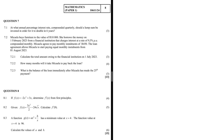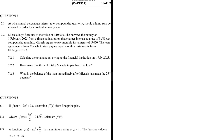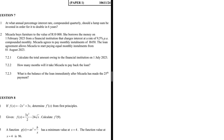At what annual percentage interest rate compounded quarterly should a lump sum be invested in order for it to double in six years? So we want some lump sum, let's say k, to double in six years. From k, in six years we shall have 2k. That's what it means when we say a lump sum should double in six years.